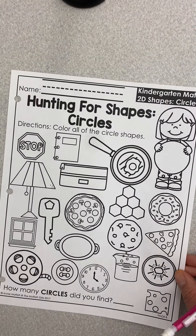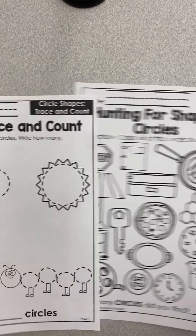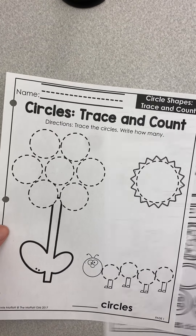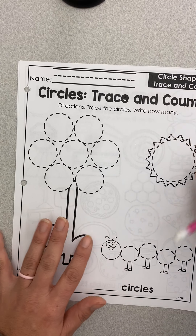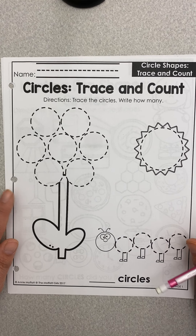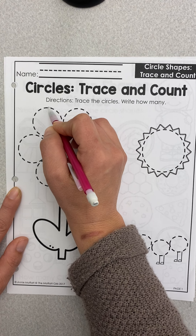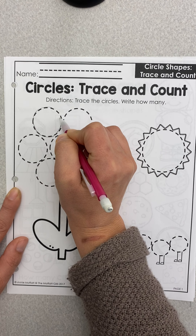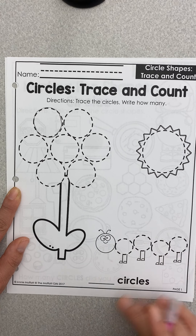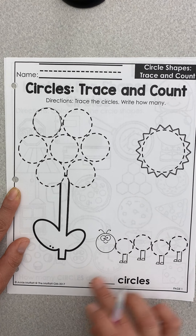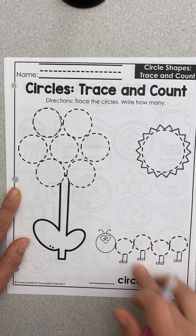Next, it'll be time for you to complete your math worksheets. Turn to the blue page and find the circle tracing, count, and hunting for circles pages. We're going to start with the circle tracing page. Write your name, and then as you trace each circle, count it — trace it and say one, and keep going. Write how many circles you traced right here. Make sure you trace all the circles and then write that number. You may go back and color the circles when you're done.